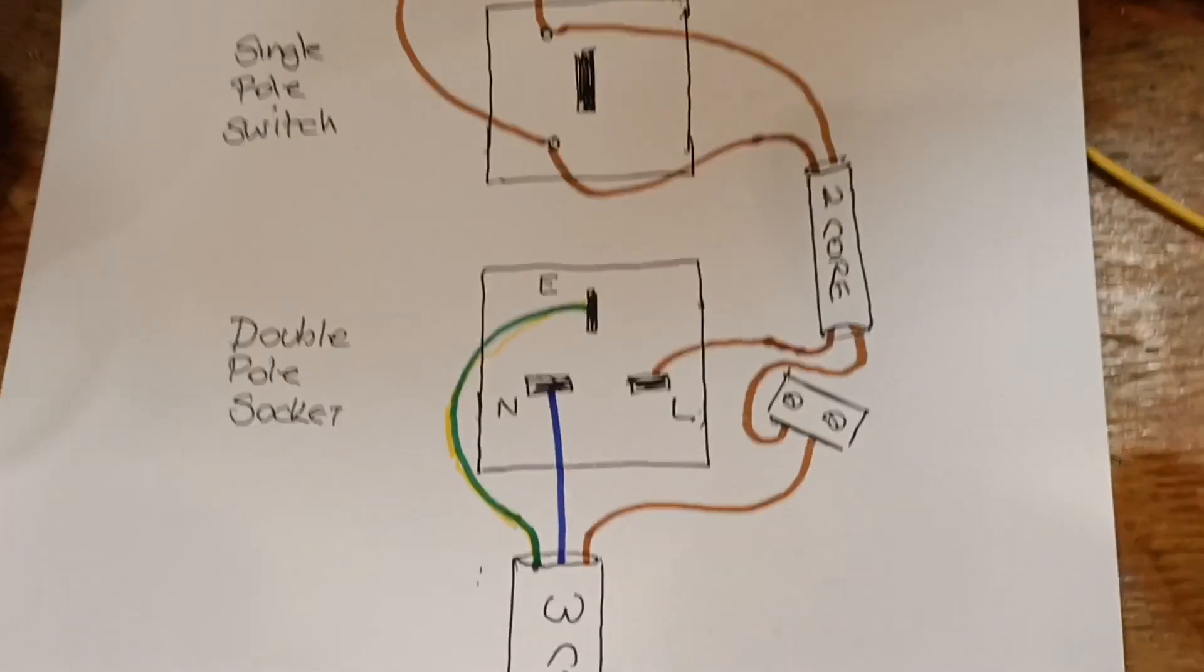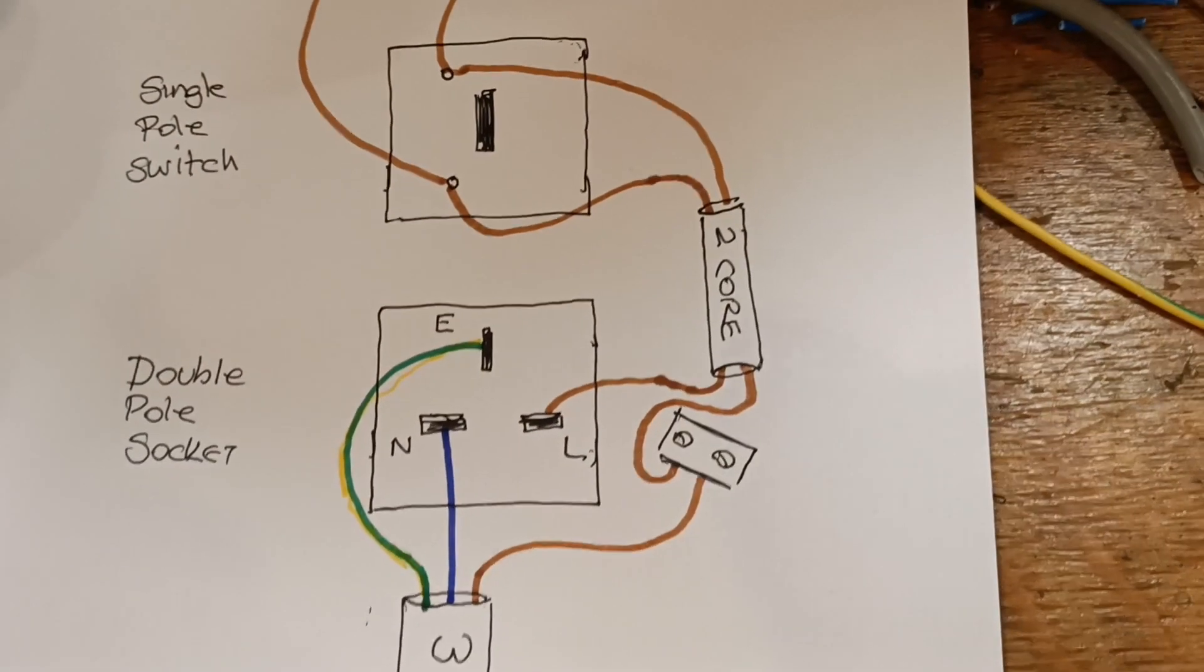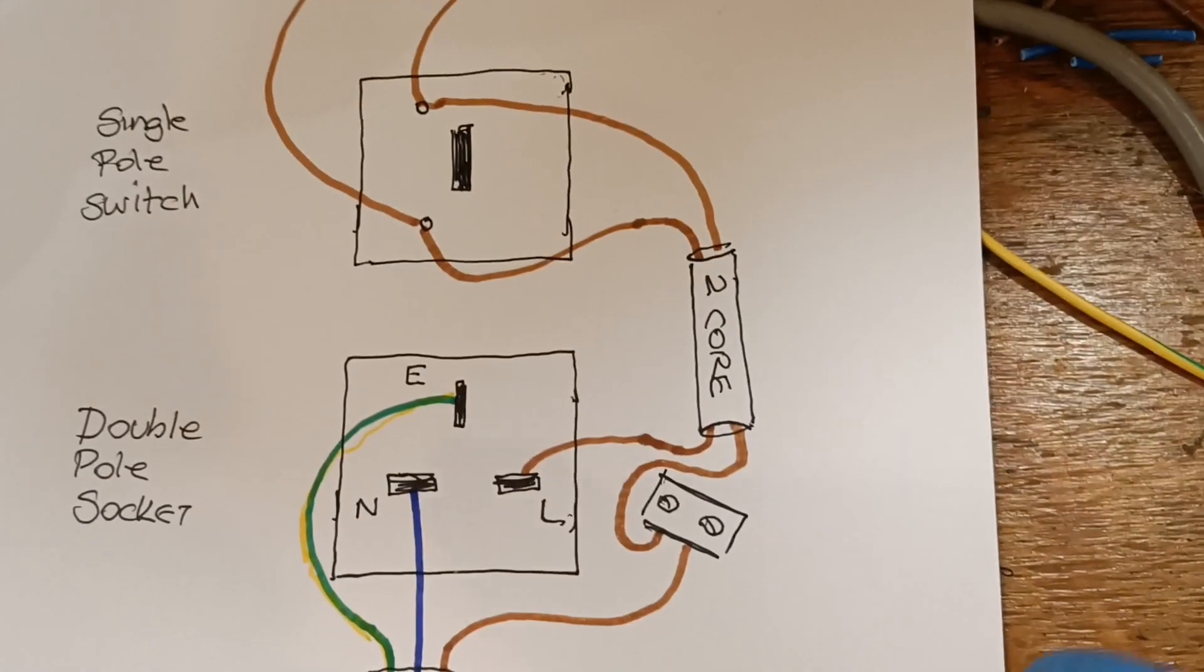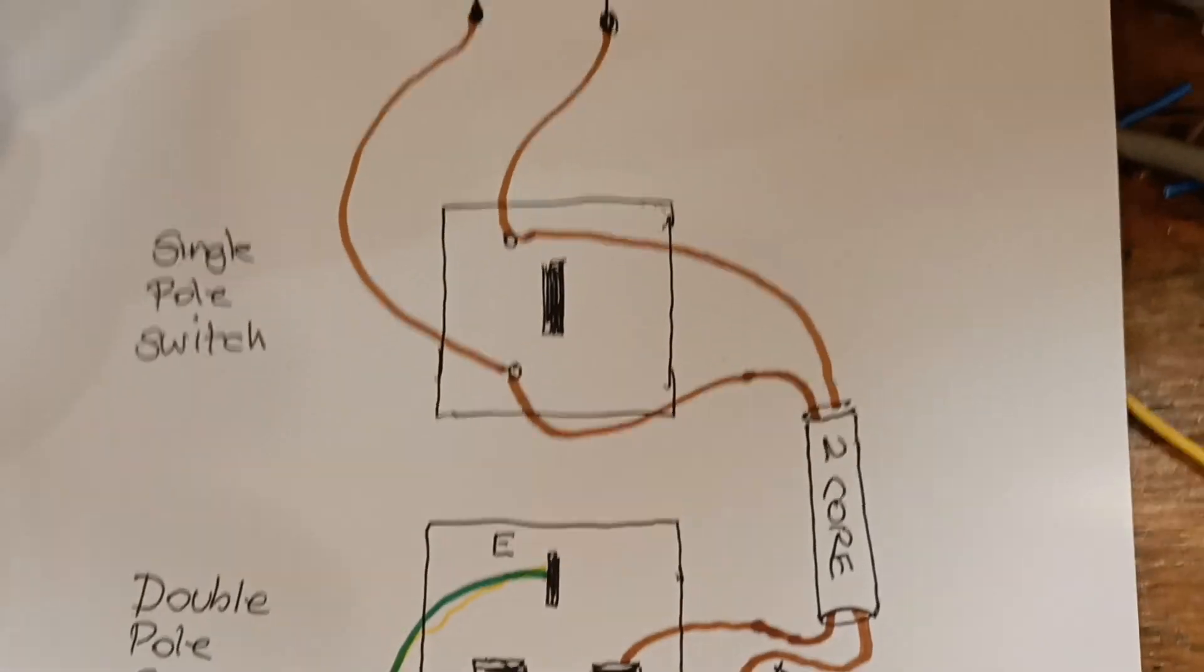And then from that block, you need a 2 core cable. You're going to run one part of it into the block, the other cable into the line on your socket, and then you're going to run that to your single pole switch.